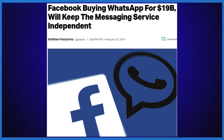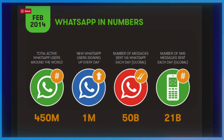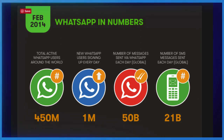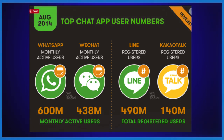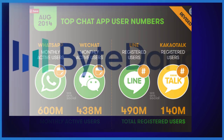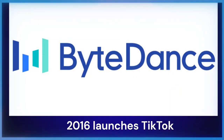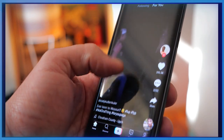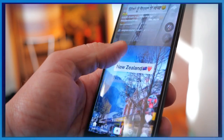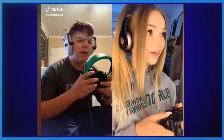In February of 2014, Facebook purchased WhatsApp for 19 billion dollars. At the time of purchase, WhatsApp had just over 450 million monthly active users, and by August of 2014 it had 600 million active users. In 2016, a Chinese tech company named ByteDance launched TikTok — a video sharing app similar to Vine that allows users to make 15 seconds to one minute videos. The app would grow in popularity among Gen Z and some younger millennials.